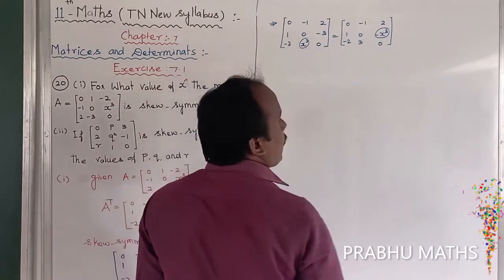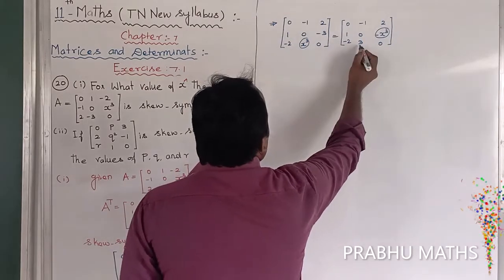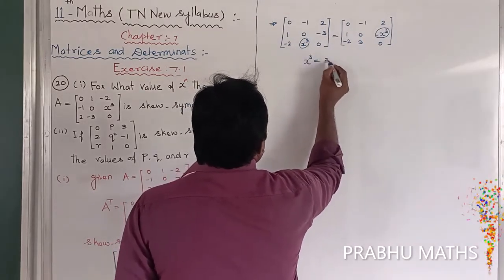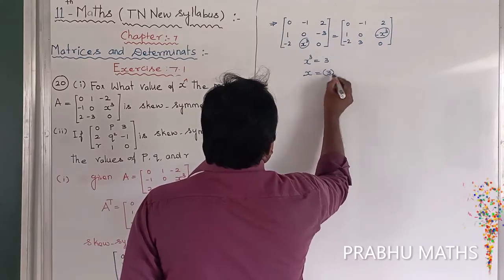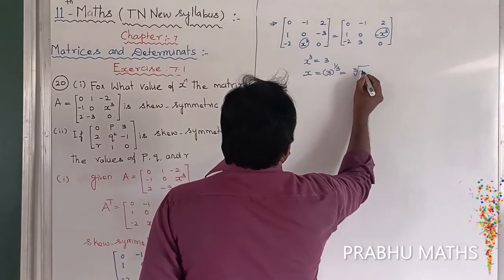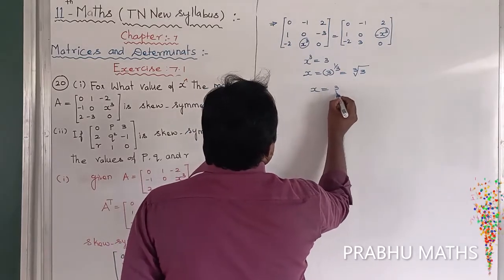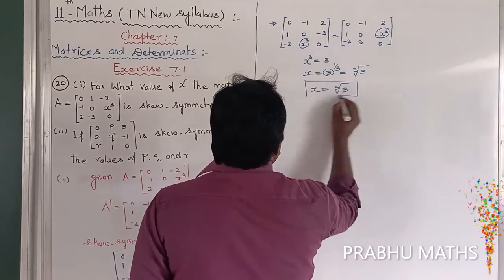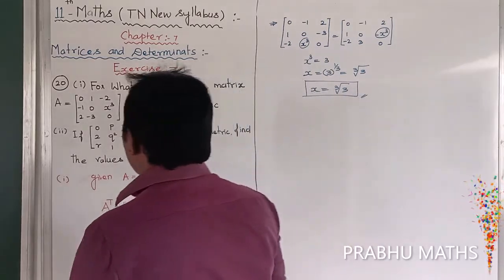Equating the corresponding entries of the matrix gives X cubed is equal to 3, that is X power 3 is equal to 3. Therefore, X is equal to 3 to the power 1 by 3, which is the cube root of 3. That is the answer for the first subdivision. Now let's go into the second subdivision.